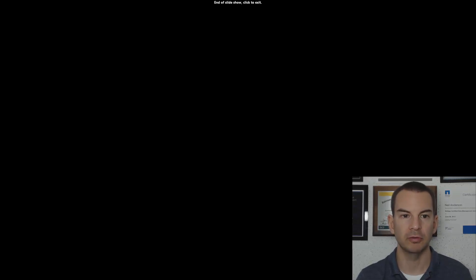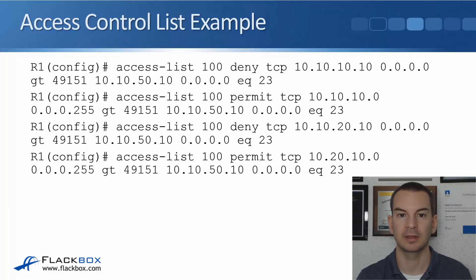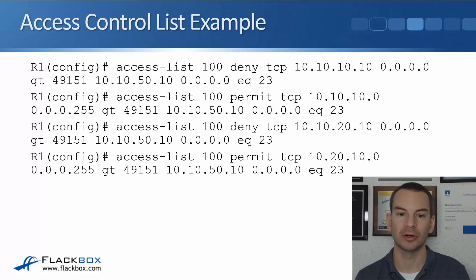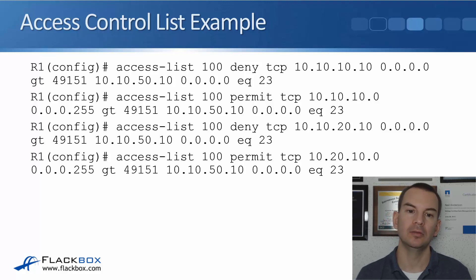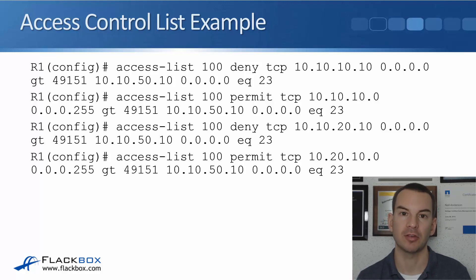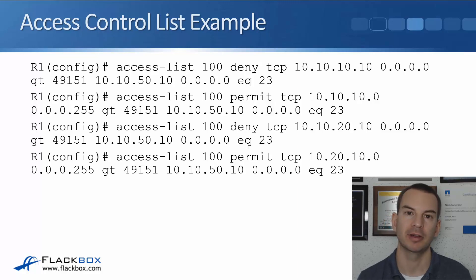That is an overview of access control lists. In the next lecture we're going to start digging deeper into the syntax of the ACL, starting with that number at the start - 100 in this example - and what that means. See you in the next lecture.